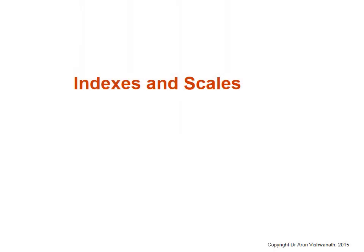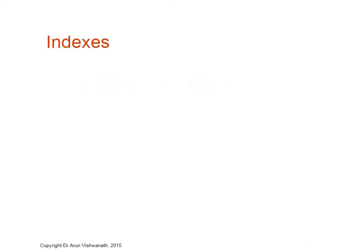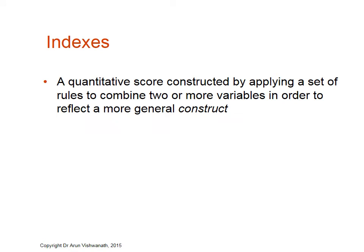We're now going to talk about indexes and scales. An index is basically a quantitative score which is constructed by applying a set of rules that combines two or more variables in order to reflect a more general construct. We don't use indexes as often in the field of communication, but a social science where indexes are used very routinely is economics.